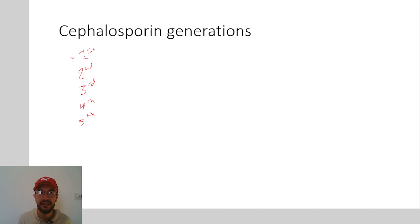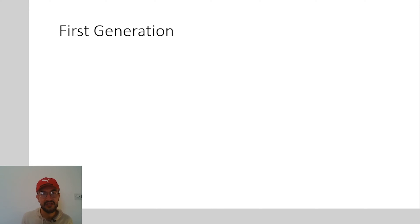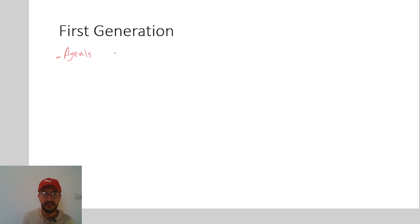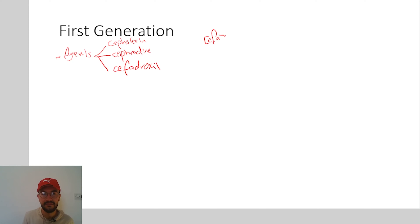Let's start by talking about the first generation of the cephalosporins. The agents of this generation include cephalexin, cephalosporin, cephaloxyl, and cefadroxyl.